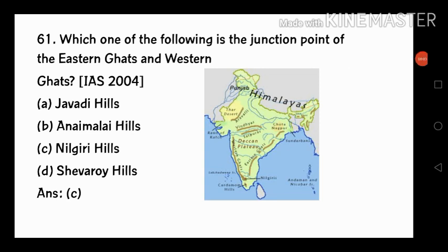So, the first question is: which one of the following is the junction point of Eastern Ghat and Western Ghat? This is from IAS Example 2004. The options are: Zabadi Hills, Annamalai Hills, Nilgiri Hills, and Sovereign Hills.